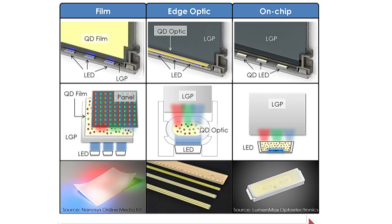So in this case for the film, because you're using two pieces of very expensive barrier film sandwiching the quantum dot layer, these films can go anywhere from $120 to $200 in a 55-inch TV — a very, very expensive component. So then we move to an edge optic, and this is essentially what ColorIQ is — what QDVision makes today. If you have an edge-lit display, we put the quantum dot optic, which is a glass tube that's hermetically sealed and filled with the red and green quantum dots, sitting right on top of the LED between the LED and the light guide plate.